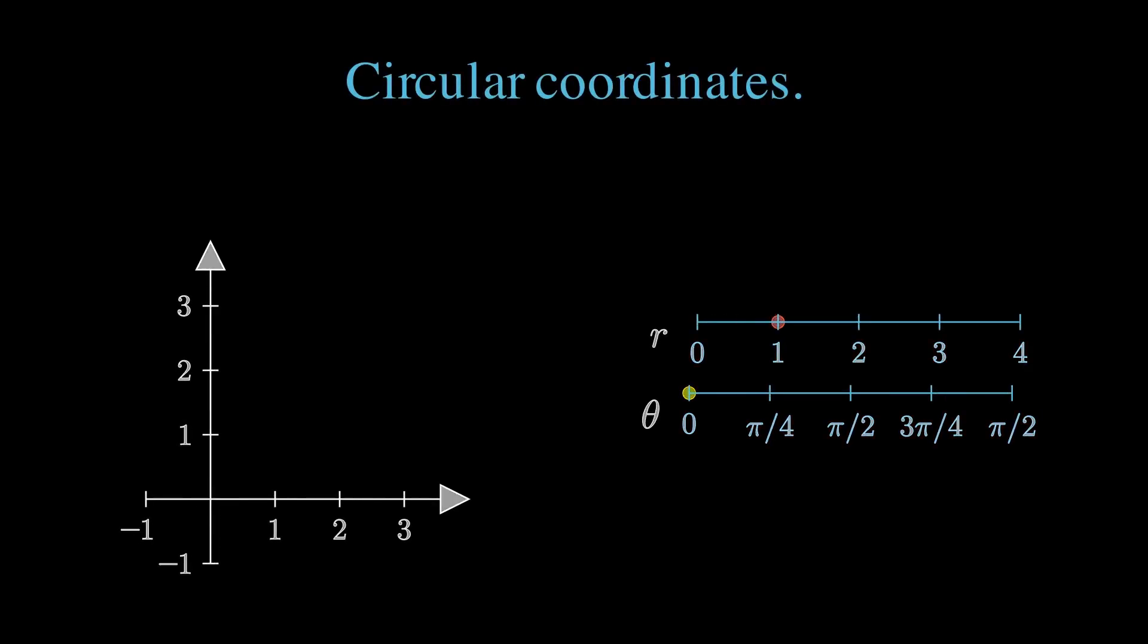Circular coordinates are parameterized points in the plane using an angle and radial length. Keeping the radius fixed and varying the angle, we trace out circular arcs.